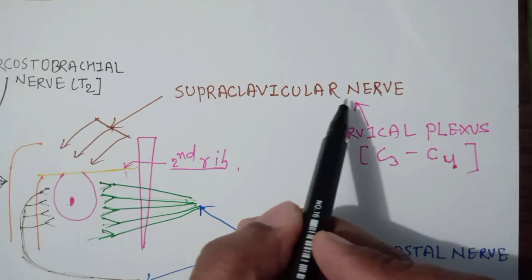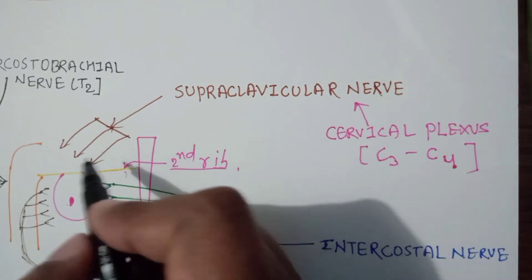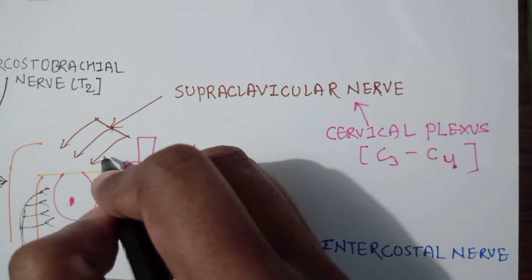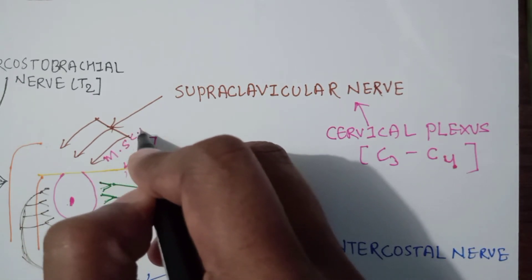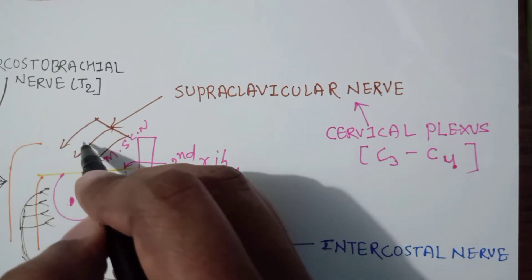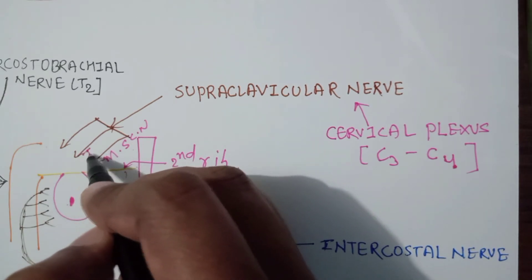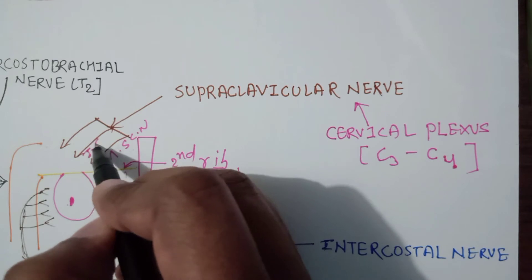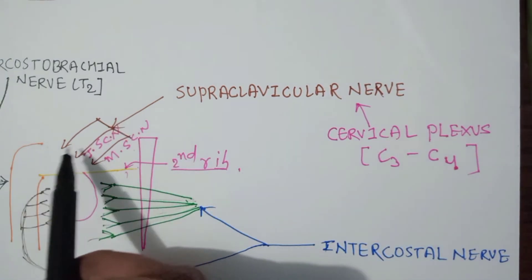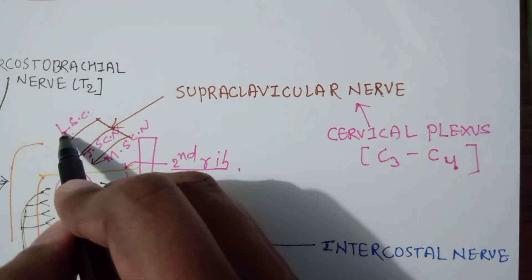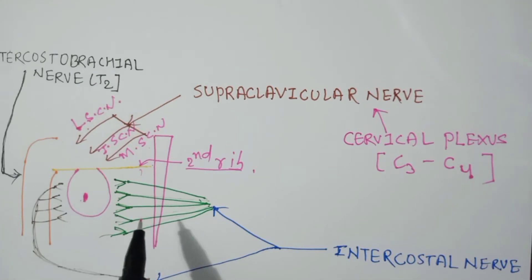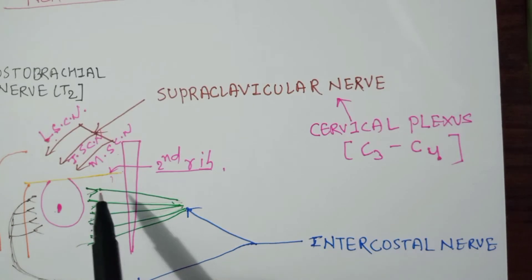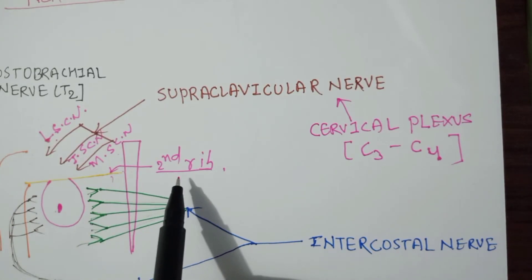This supraclavicular nerve is divided into the medial supraclavicular nerve, the intermediate supraclavicular nerve, and the lateral supraclavicular nerve.